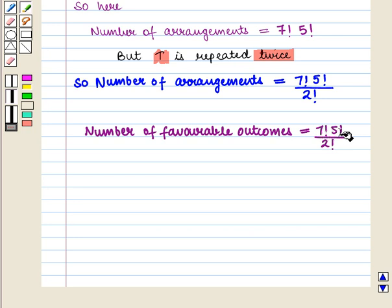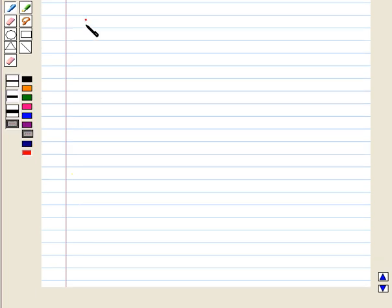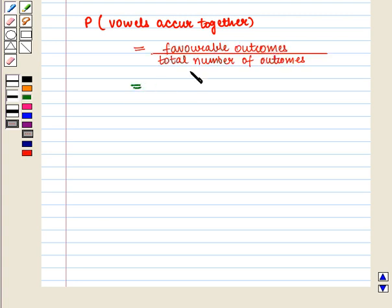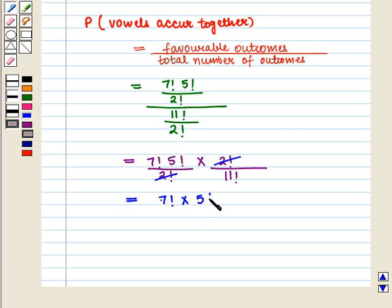The number of favorable outcomes is 7 factorial into 5 factorial upon 2 factorial, and the total number of outcomes is 11 factorial upon 2 factorial. So the probability that vowels occur together equals 7 factorial into 5 factorial upon 2 factorial, divided by 11 factorial upon 2 factorial. The two factorials cancel, leaving 7 factorial into 5 factorial upon 11 factorial.